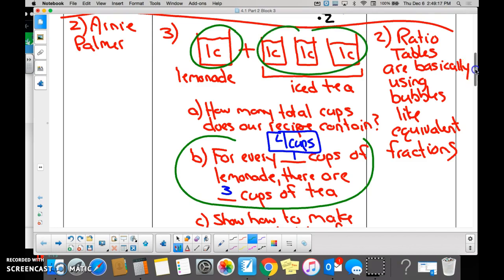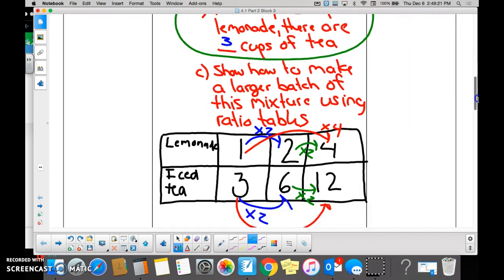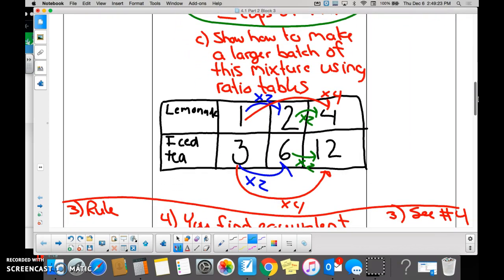That's how we make our Arnold Palmers. And then I asked you to make a larger batch using a ratio table. And you all started with the recipe I gave you, one lemonade to three iced teas. Yes, no? Yes. And some of you just said, well, I'm just going to double it. If I double my lemonade, I go from one cup to two cups, right? Eyes are up here?